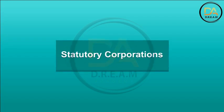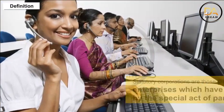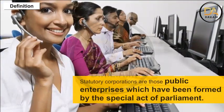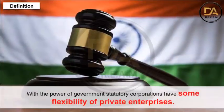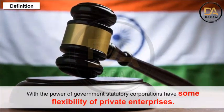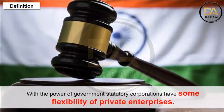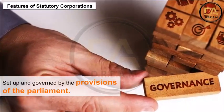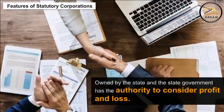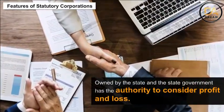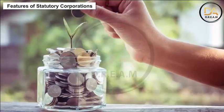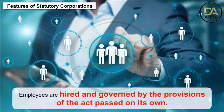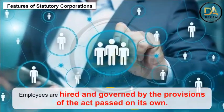Statutory corporations. Definition: Statutory corporations are those public enterprises which have been formed by a special act of parliament, with the power of government. Statutory corporations have some flexibility of private enterprises. Features of statutory corporations: set up and governed by the provisions of parliament; owned by the state and state government; has the authority to consider profit and loss; funded by borrowings from the government and revenues; employees are hired and governed by the provisions of the act passed on its own.